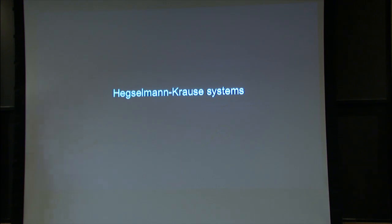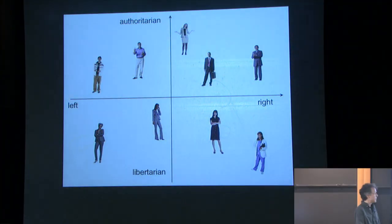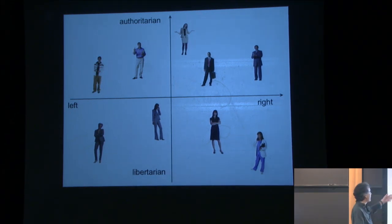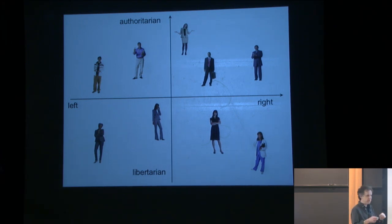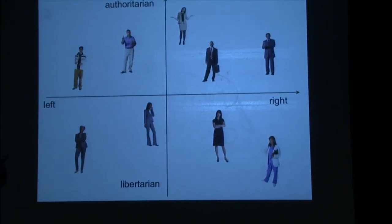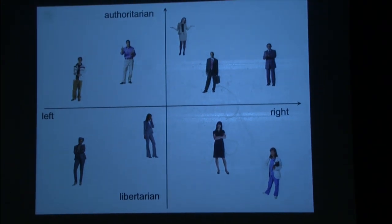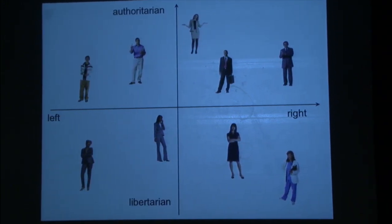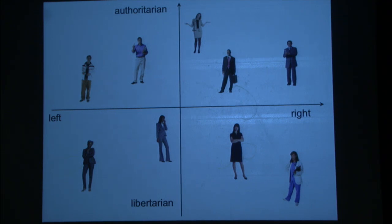Let's get started with the model organism in this kind of work, which is the Hegselmann-Krause system. This actually bears on the election because it's a model that political scientists like to study, where there are people we call agents put on a map — left, right, authoritarian, libertarian. The premise of the model is that people evolve their opinions not so much as a function of who they listen to, but as a function of who they listen to who share common opinions. You pay attention to people who think like you.